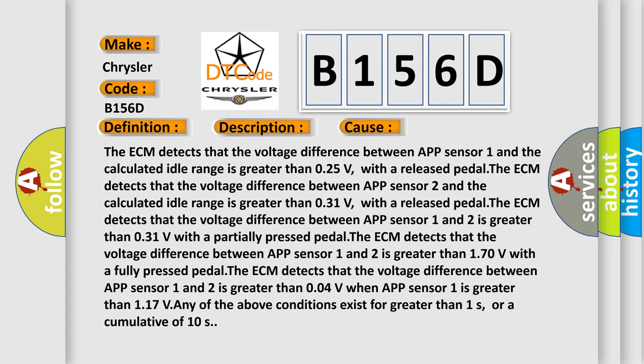With a released pedal, the ECM detects that the voltage difference between APP sensor 1 and 2 is greater than 0.31V. With a fully pressed pedal, the ECM detects that the voltage difference between APP sensor 1 and 2 is greater than 1.70V.